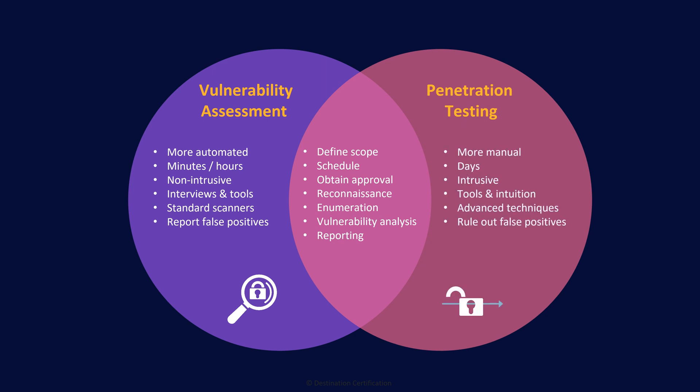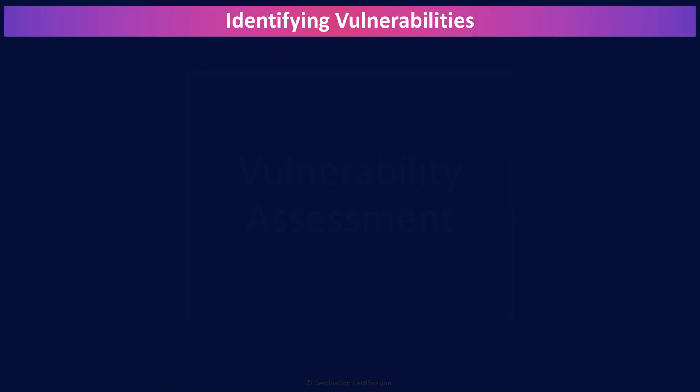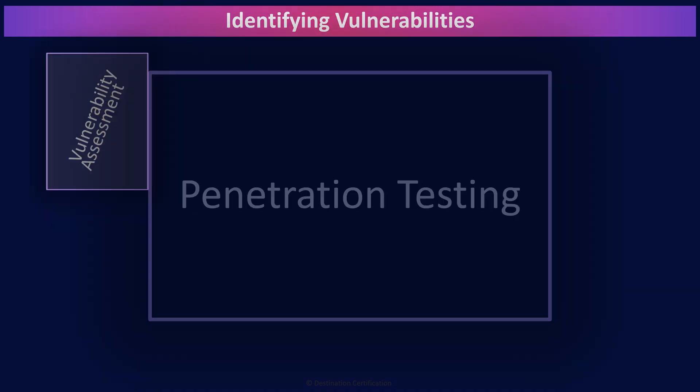In a penetration test, we identify potential vulnerabilities and then attempt to exploit them to verify if the vulnerability truly exists and can be exploited, thus eliminating false positives. Vulnerability assessments tend to be faster and more automated but generate more false positives. Penetration tests are slower and tend to be more manual, with a much higher likelihood of negatively impacting a system, but they provide a much clearer picture of the security of a system.